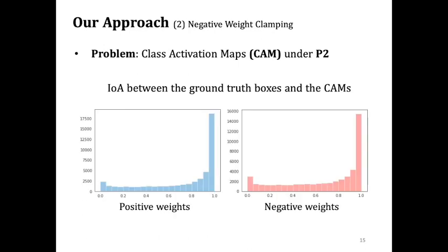Furthermore, the histograms show the intersection over area between the ground truth boxes and the class activation maps generated from positive and negative weights. Surprisingly, a majority of the features with negative weights are activated inside the object regions, similar to the positive weights.